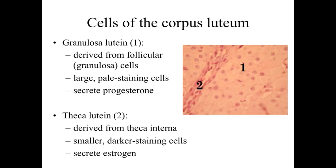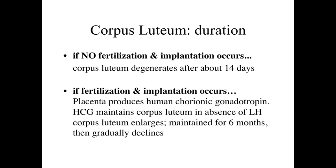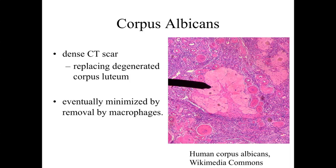These cells are going to be secreting large amounts of progesterone and estrogen released from the ovary, indicating we're in the luteal phase and triggering changes in the uterine wall. If no fertilization and implantation occurs, the corpus luteum is going to degenerate and break down. If fertilization and implantation does occur, the placenta is going to start to produce human chorionic gonadotropin, HCG, which is going to maintain the corpus luteum so that it remains present and enlarged for about 6 months, continually producing estrogen and progesterone. After about 6 months it's going to start to decline, as the placenta is able to maintain further development on its own. The corpus luteum, as it breaks down, is going to become a corpus albicans, leaving a dense connective tissue scar present within the ovary, which will be minimized by macrophages.